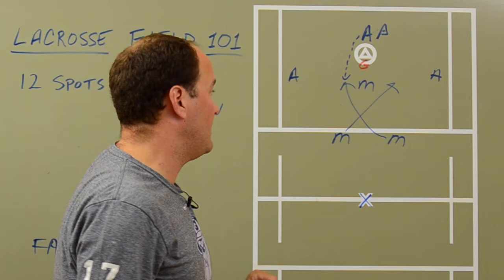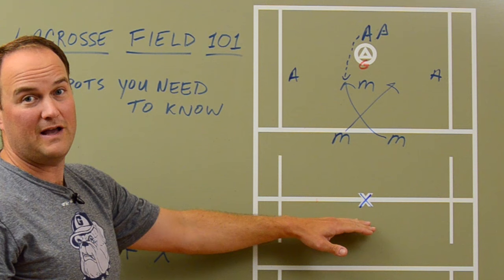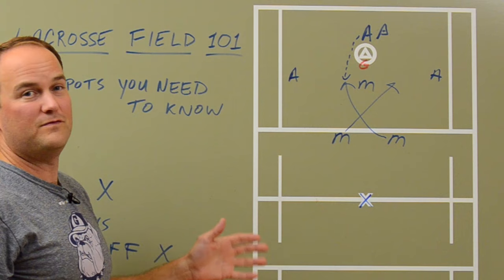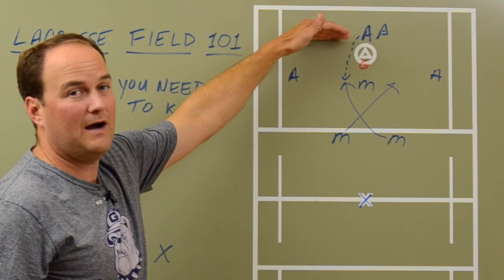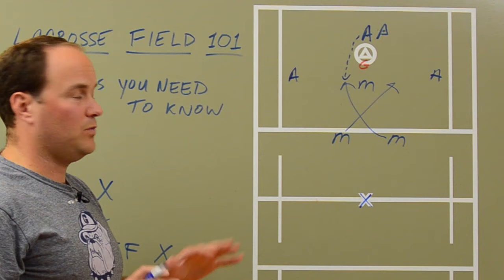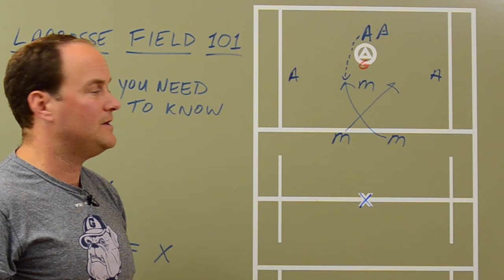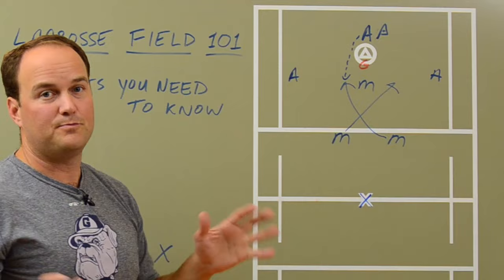Now the difference between this X behind the goal and the faceoff X is pretty obvious, but a lot of times coaches just say X. So if the other team scored and there's a faceoff, your coach may say 'get to the X,' which means you're facing off — as opposed to running a play getting the ball through X, which would mean behind the cage. The faceoff position is one of the most important positions on the field. It helps gain possession, and possessions are key in lacrosse. Understanding the difference between the X, the faceoff X, and X is pretty important.